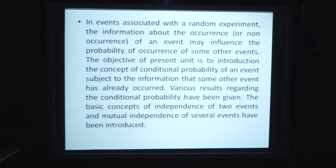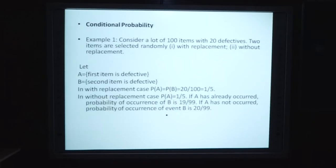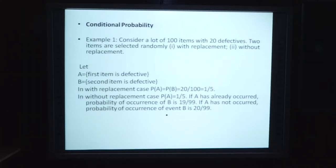Various results regarding the conditional probability have been given. The basic concept of independence of two events and mutual independence of several events have been introduced. Now conditional probability - abhi ek day-to-day example: a lot of hundred items with twenty defectives, two items are selected randomly - number one with replacement and without replacement. Ab iska proof agar hum dekhte hain, let A is equal to first item is defective and B second item is defective, hamare paas dho chances hain.